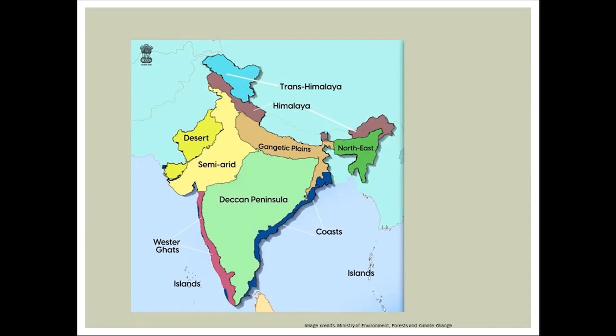At an altitude of 1800 meters in Palni, Annamalai, and Nilgiri hills, one finds shola grasslands. The animal known as Nilgiri Tahr is found in these shola grasslands of southern India. Sholas are present in the southern part of the Western Ghats.